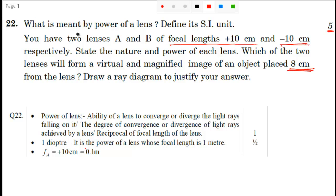So we will go one by one. What is meant by power of a lens? The ability of a lens to converge or diverge the light rays falling on it. And you know that it is a reciprocal of focal length of the lens. So quite theoretical question. So we are done with this and you will be awarded one mark for that.